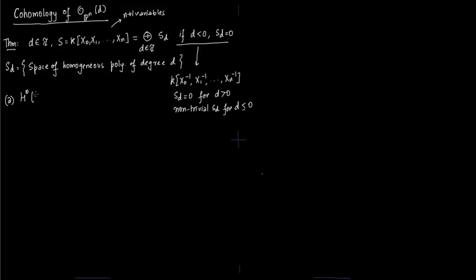Let us start with the theorem. First we talk about the global sections H^0 — these are very easy. This is just the space of homogeneous polynomials of degree d. You take the ring, take the space of homogeneous polynomials of degree d, and they define the space H^0.